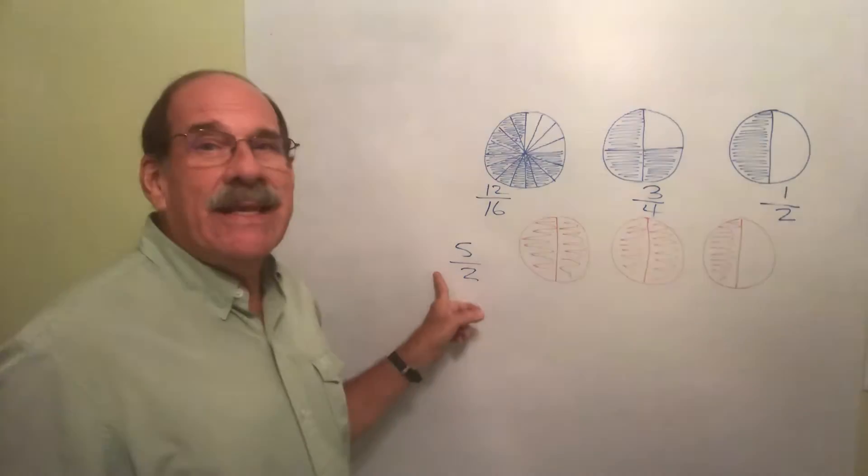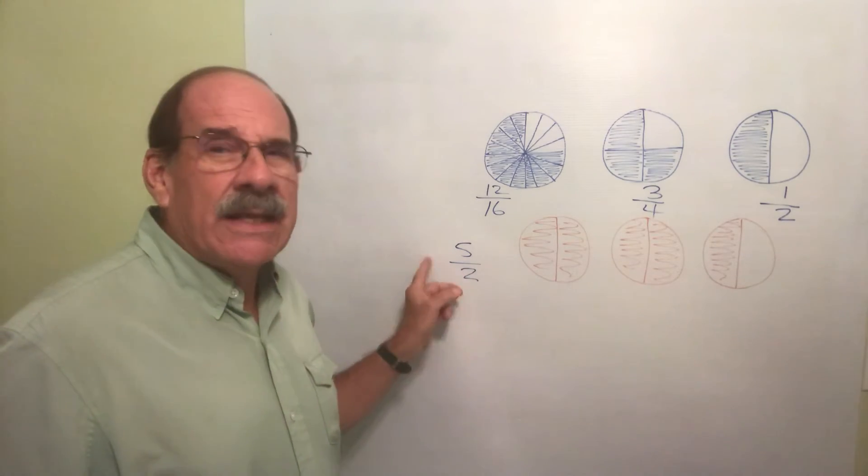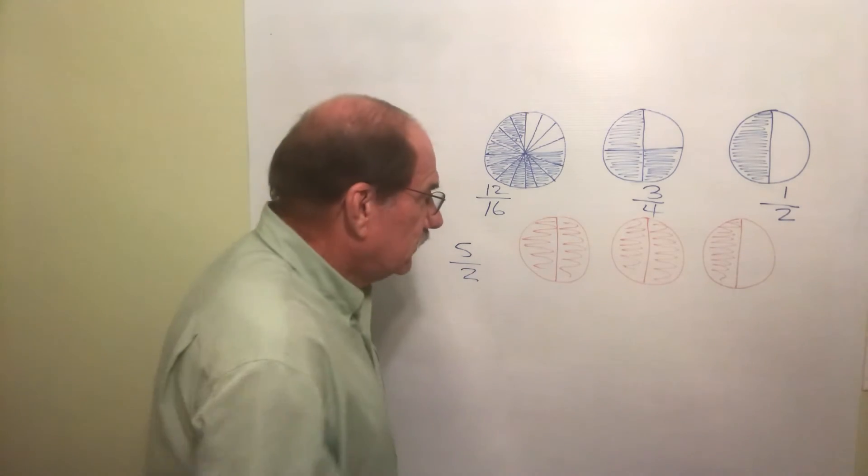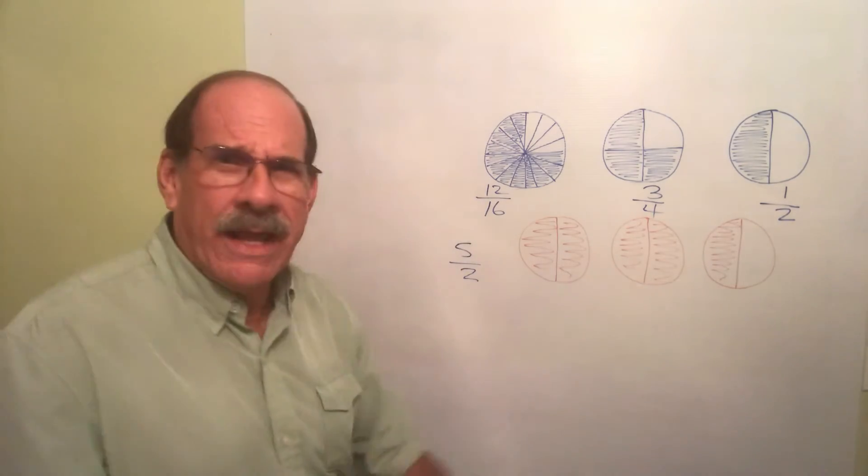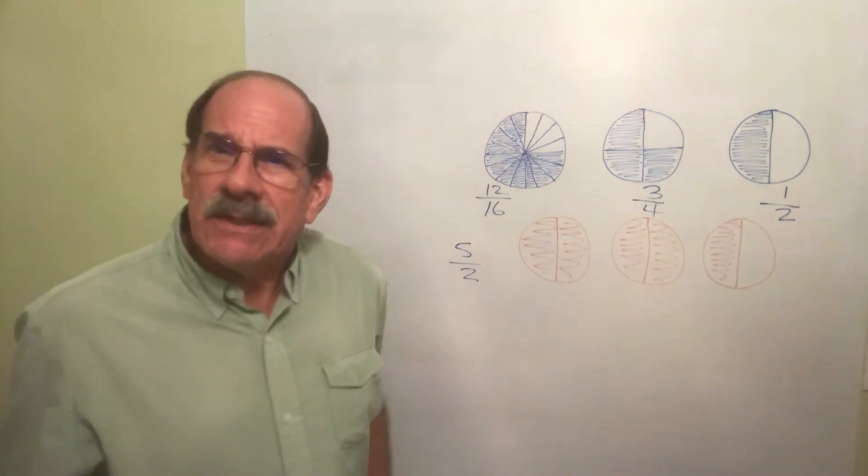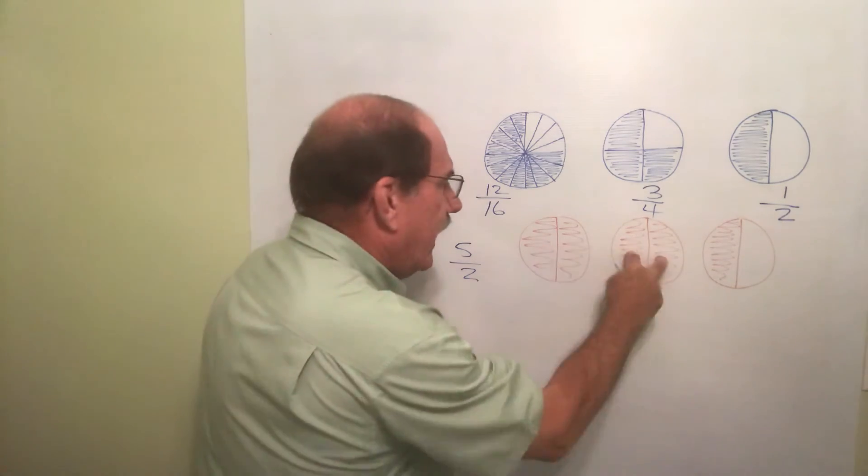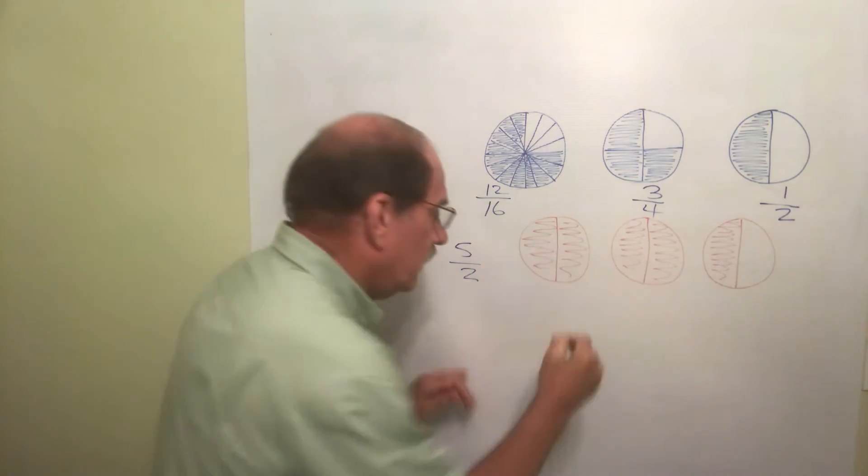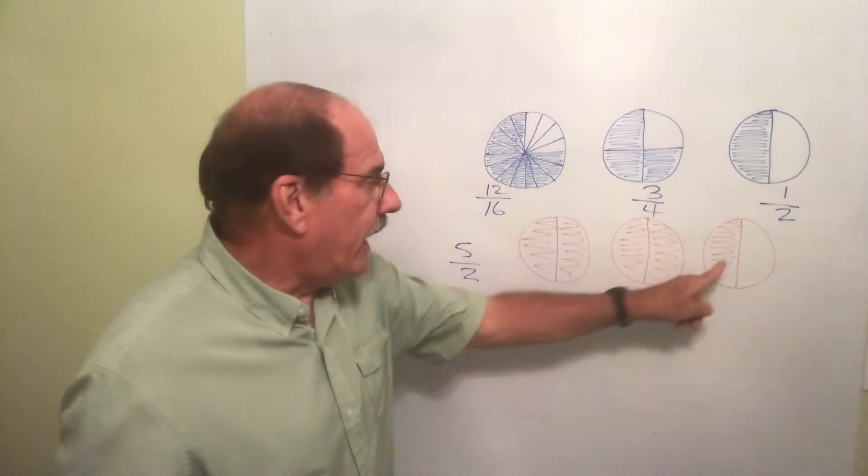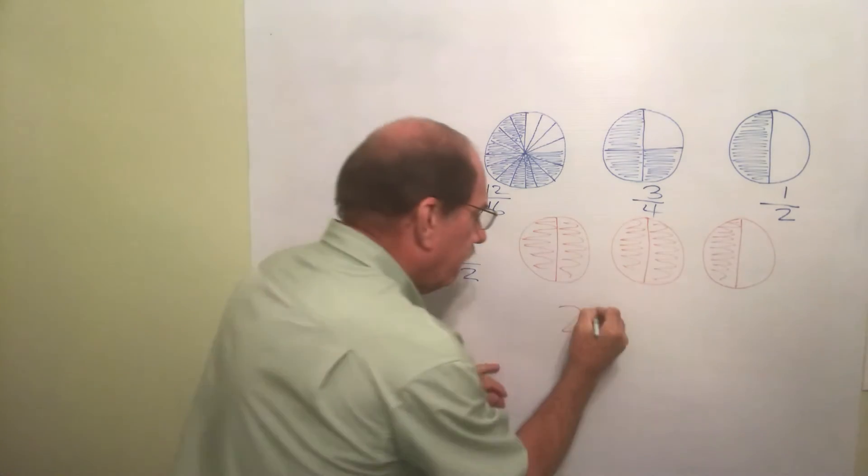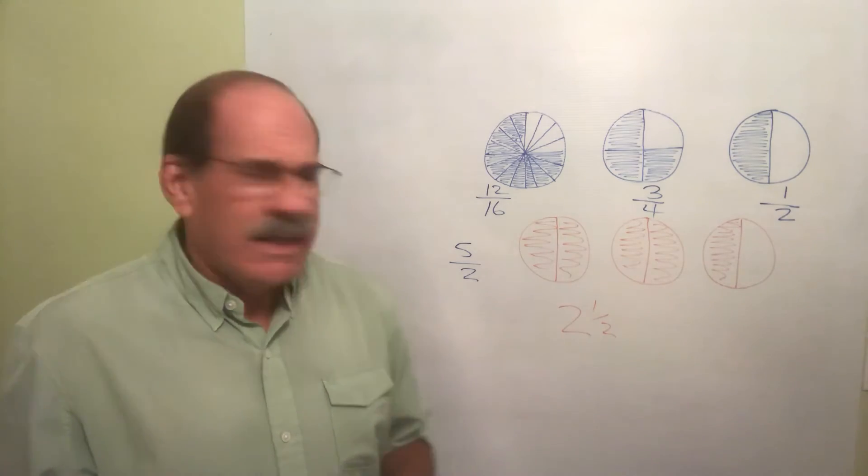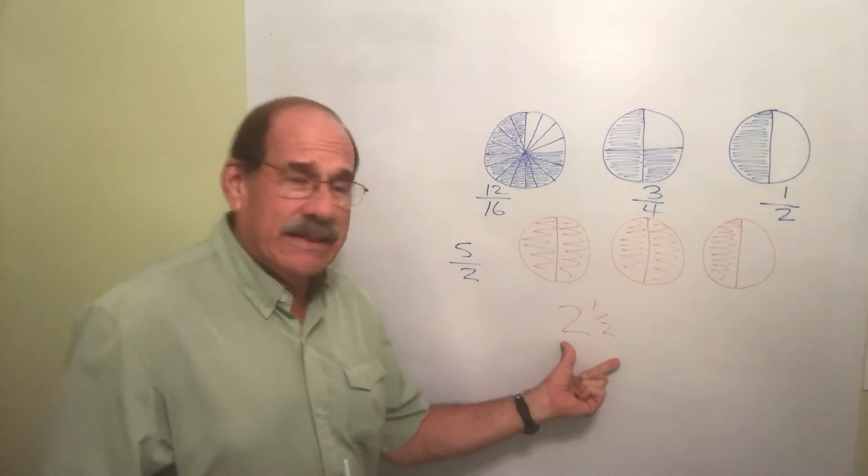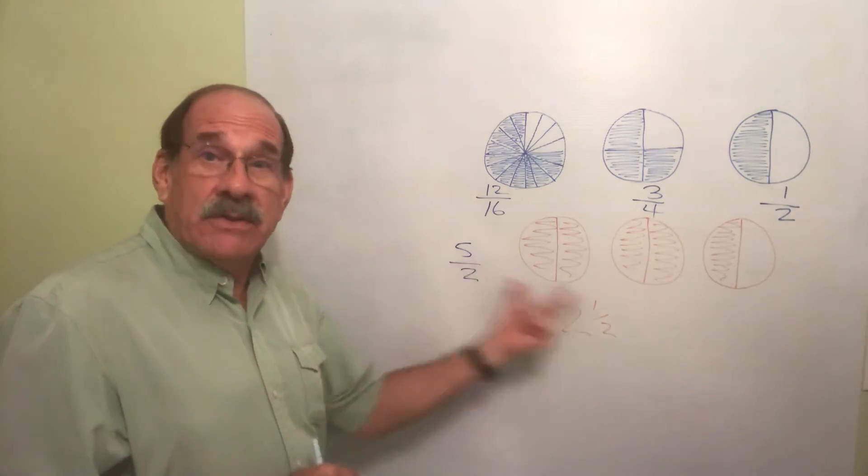That's an improper fraction. But wait - sounds like some infomercial - but wait, if you order now, there's a better way to write this. I have two whole pizzas and one half of this other one. I have two and a half pizzas.